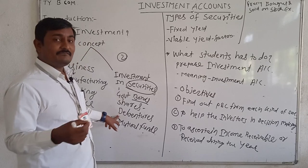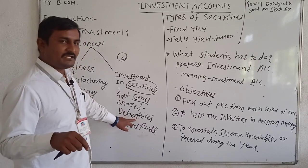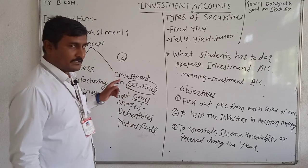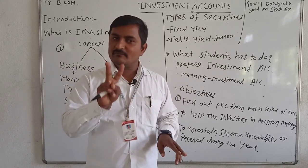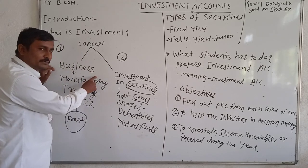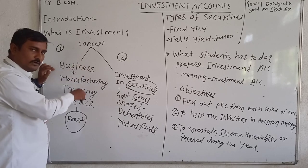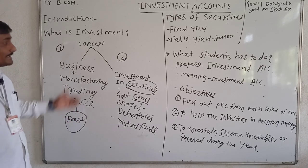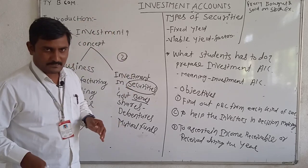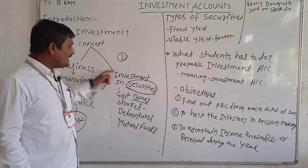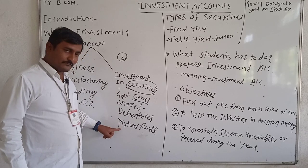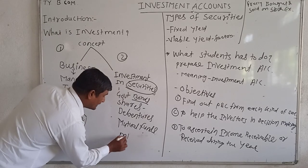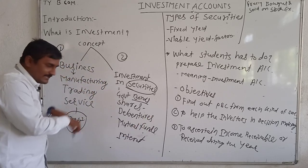Money is also invested into debentures — a concept you studied in SP and in second-year Corporate Accounting — and into mutual funds. So to summarize the two angles: the first angle is money invested into one's own business (manufacturing, trading, or service concern) where the businessman enjoys profit. The second angle is money invested into an already established, going-concern business through government bonds, shares, debentures, or mutual funds.